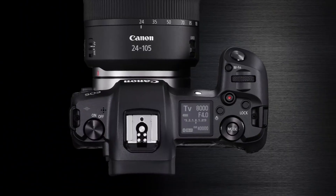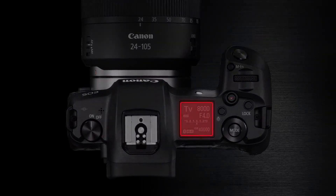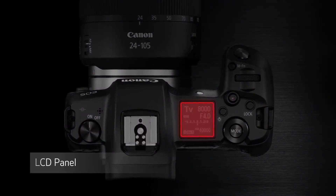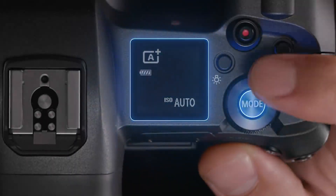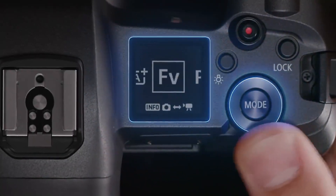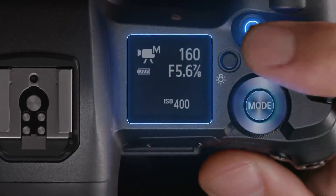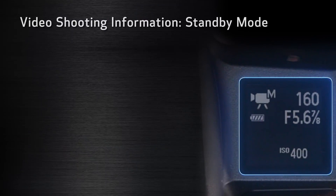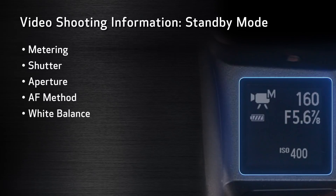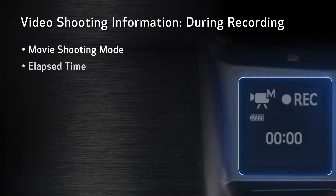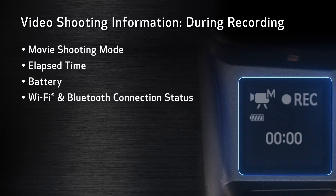Here's another new feature: the dot matrix LCD panel on top of the camera. This panel provides the current parameters and camera status requiring real-time notification. It can also display camera settings that you can adjust directly without camera controls. Video shooting information is displayed in standby mode indicating metering, shutter, aperture, AF method, white balance, movie digital IS setting, possible recording time, and resolution. During recording it indicates movie shooting mode, elapsed time, battery, Wi-Fi, and Bluetooth connection status.